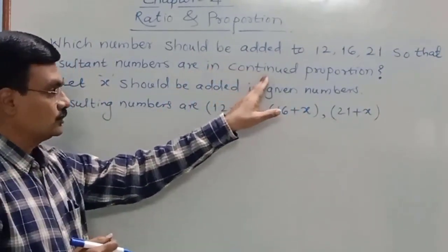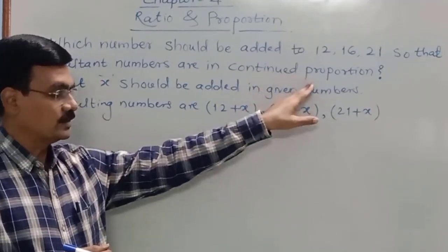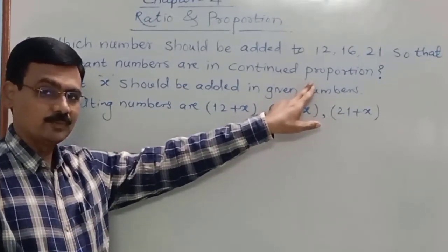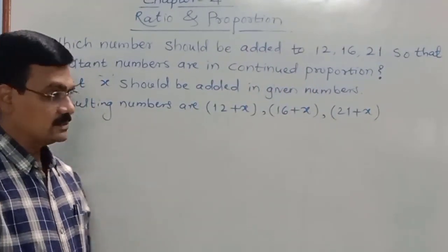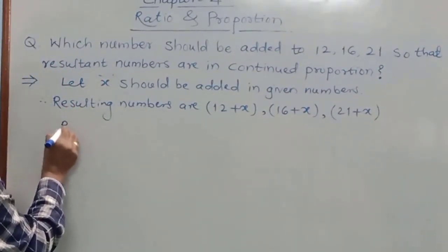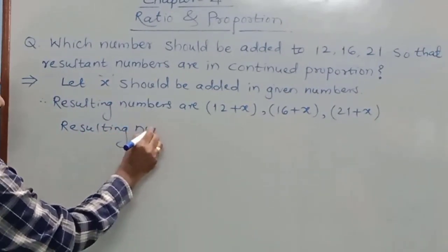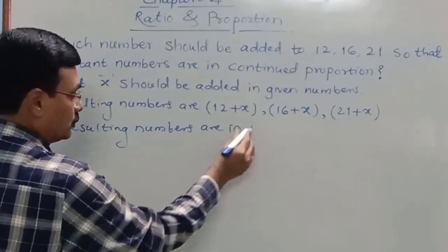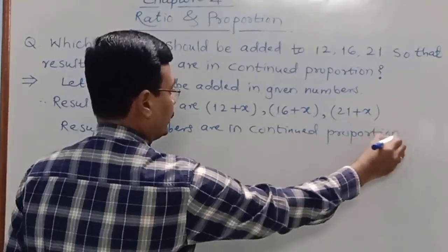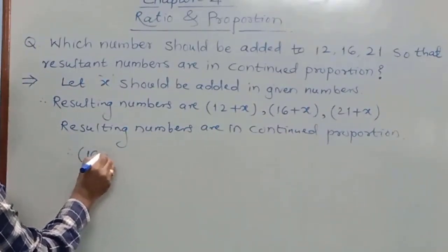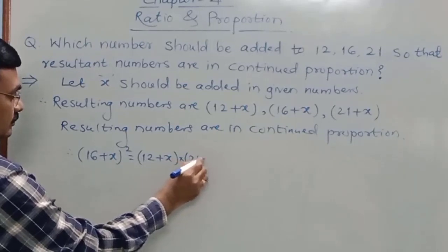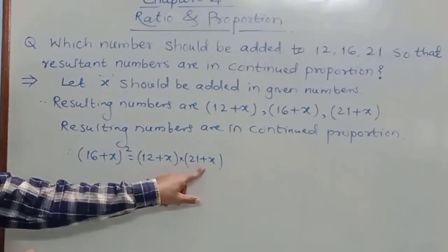The condition is that those numbers should be in continual proportion. If A, B, and C are three numbers in continual proportion, then we can say that B squared equals A times C — the square of the middle term is equal to the product of the extremes. So the resulting numbers are in continual proportion, and we apply: square of the middle term equals product of the extremes.